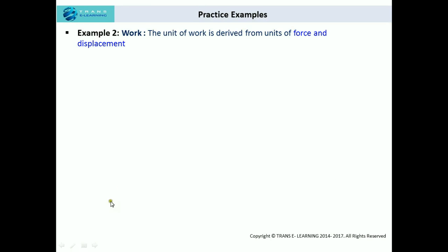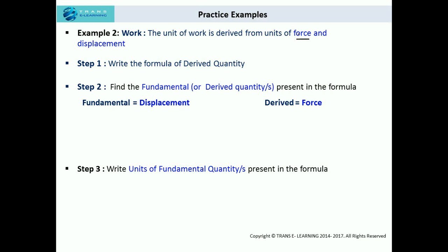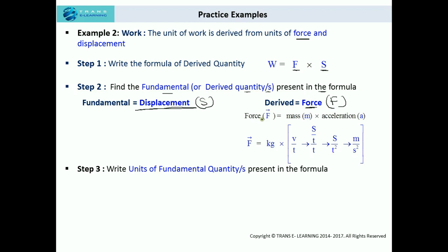Now the second example: work. We have to find the unit of work. The unit of work is derived from the units of force and displacement. Following the steps, first we write the formula: work equals force into displacement. As you can see, displacement is a fundamental quantity whereas force is a derived quantity. So in step two we find the fundamental or derived quantities in the formula, and we first write the units of force in terms of base units. The formula for force is mass into acceleration.